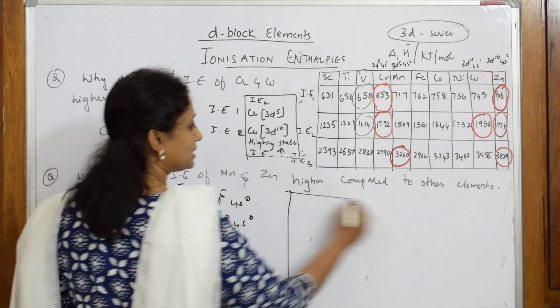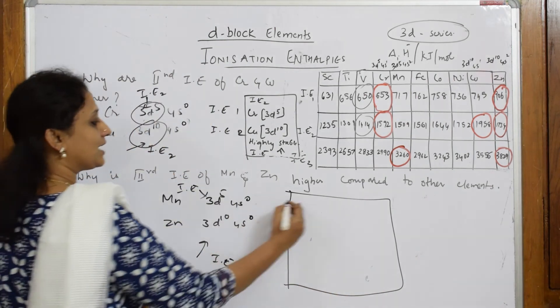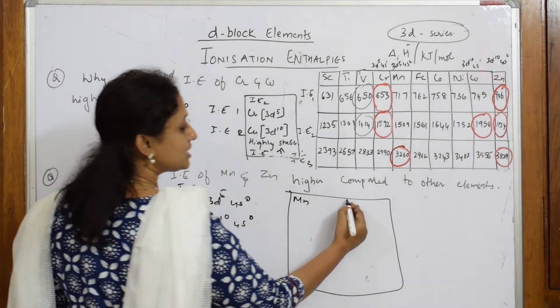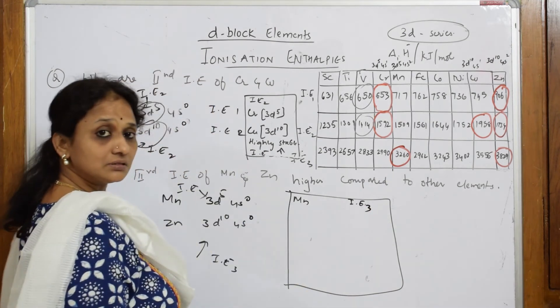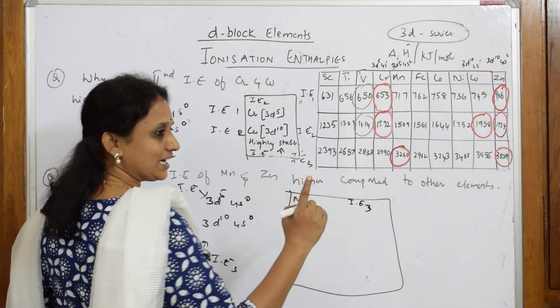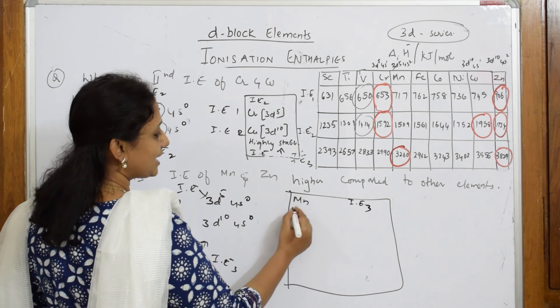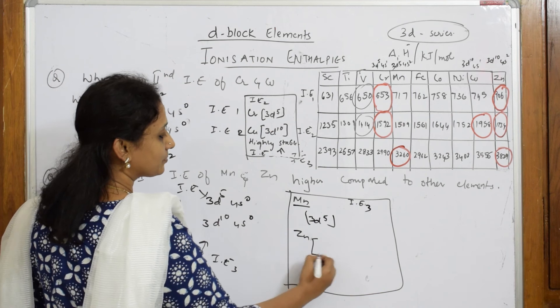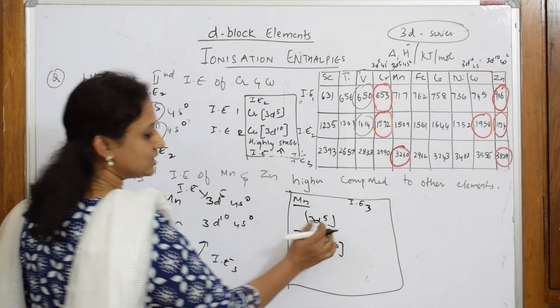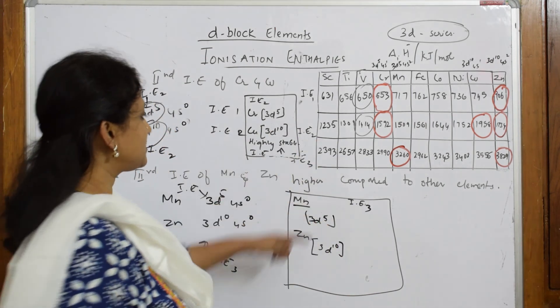So what happens here? In case of your manganese, ionization enthalpy three, that is your delta IE3, so for manganese it has become 3d5, and in case of zinc 3d10. You have to apply energy on this, the same concept here.